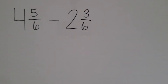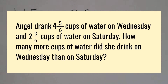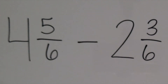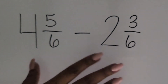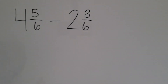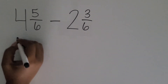Now let's look at using a diagram to solve that same problem. The word problem states that Angel drank four and five-sixths cups of water on Wednesday and two and three-sixths cups on Saturday. How many more cups did she drink on Wednesday than Saturday? When you give the word problem to students, give them time to figure it out on their own. One way they might approach it is by drawing a picture model to represent this expression.